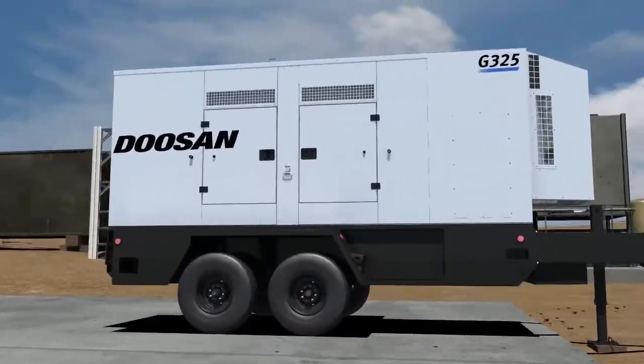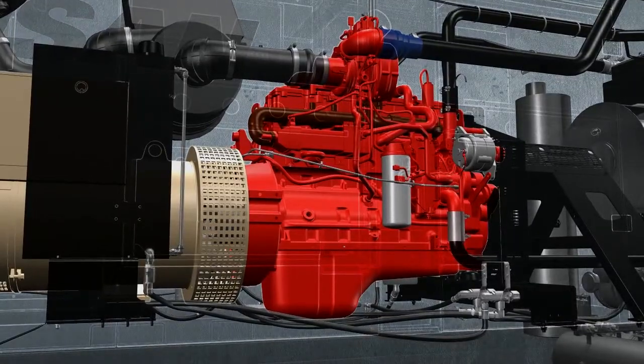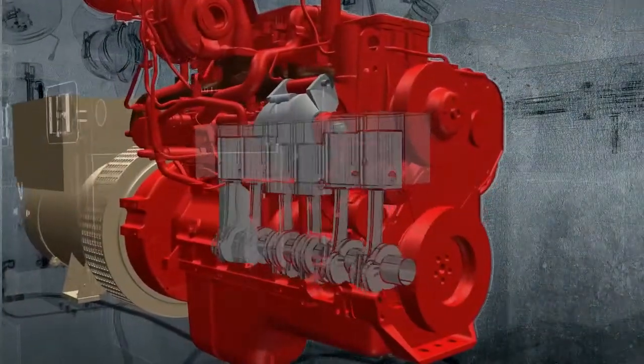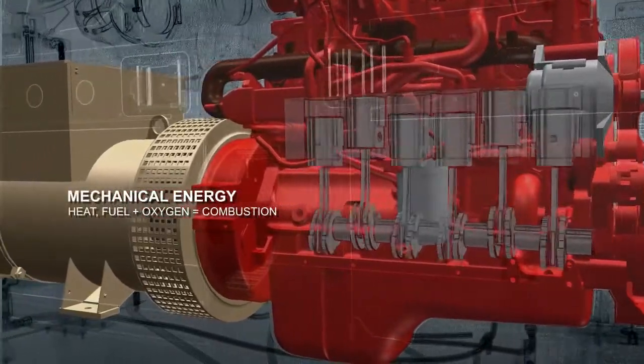A generator engine converts diesel fuel to mechanical energy that rotates the crankshaft. As combustion occurs in each cylinder, energy transmits to the engine crankshaft which generates mechanical power for the alternator.